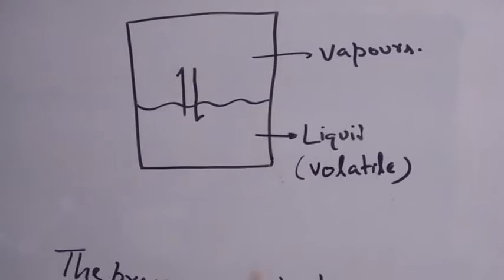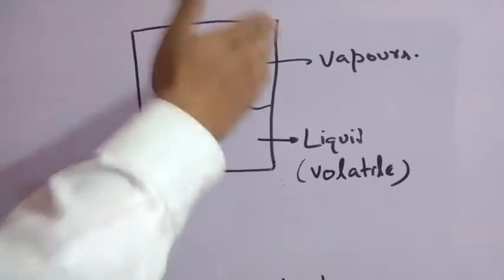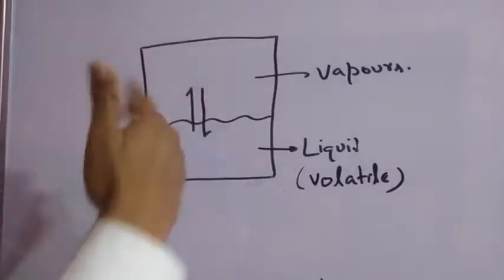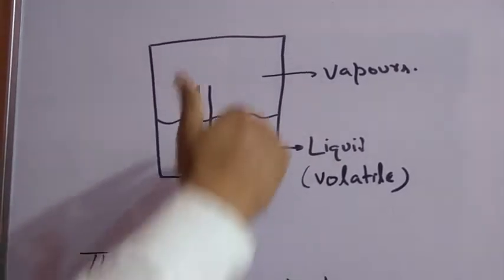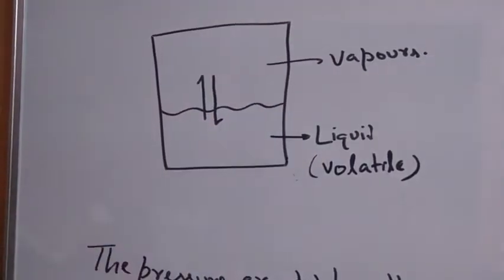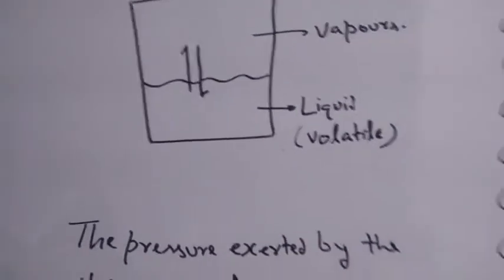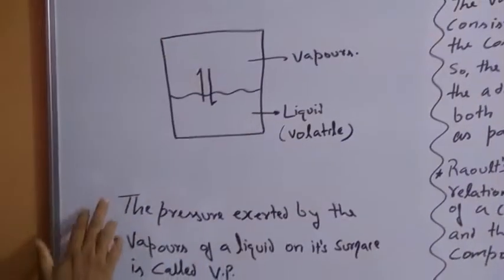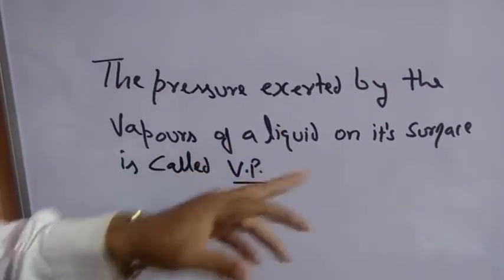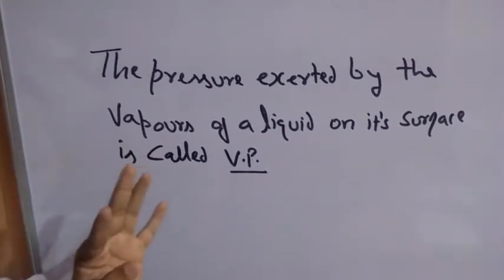But since the liquid is volatile, vapors will be made. When vapors rise to the top, they exert pressure on the surface. The pressure that vapors exert on the surface is called Vapor Pressure. As written in the definition on the diagram: the pressure exerted by the vapors of a liquid on its surface is simply known as Vapor Pressure.